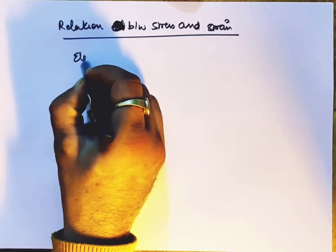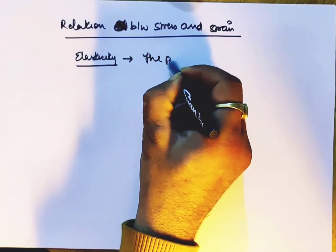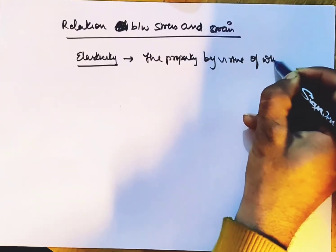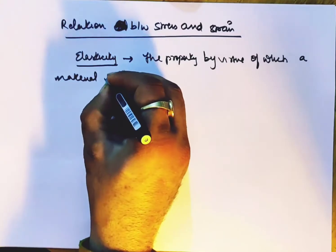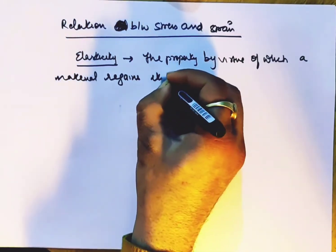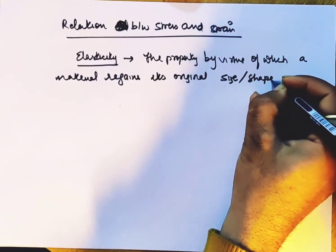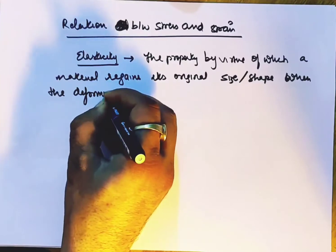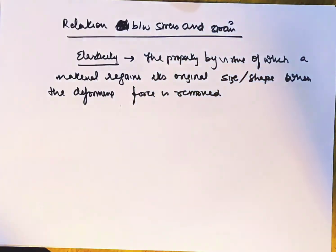What is elasticity? It is the property by virtue of which a material regains its original size and shape when the deforming force is removed. We call this elasticity.